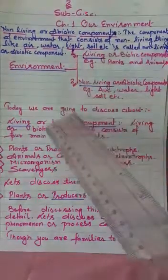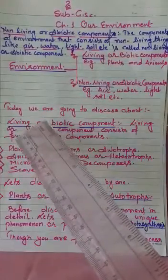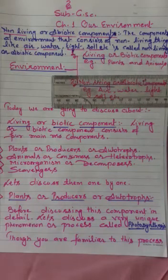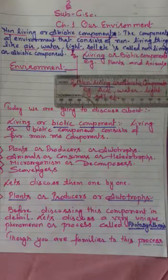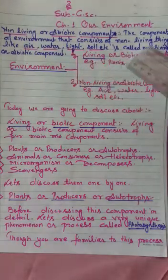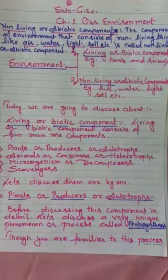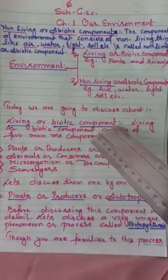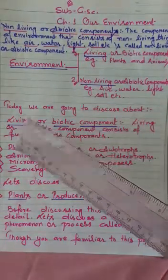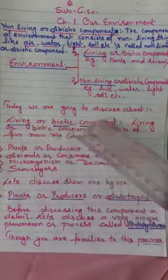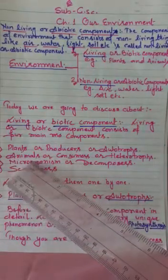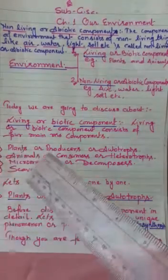Today we are going to discuss the first component in detail. Setting the second component aside, we will discuss the living or biotic component in detail. The living or biotic component consists of four parts: first, plants; second, animals; third, microorganisms; fourth, scavengers.